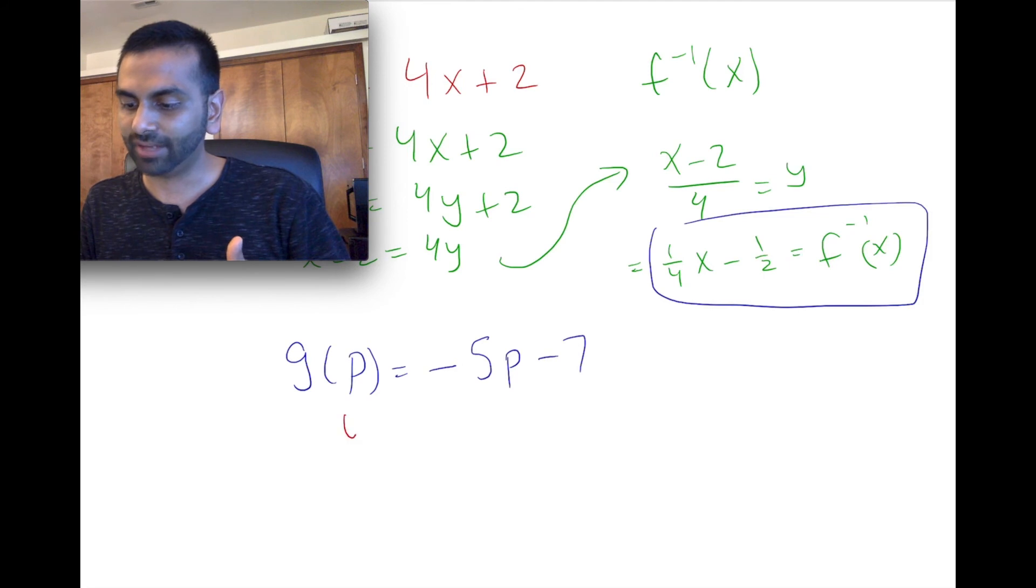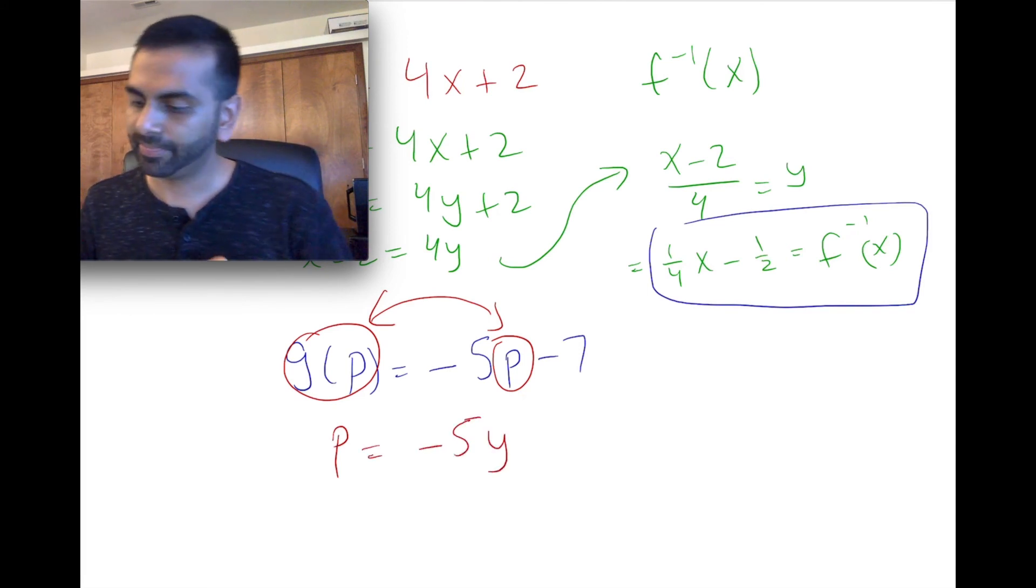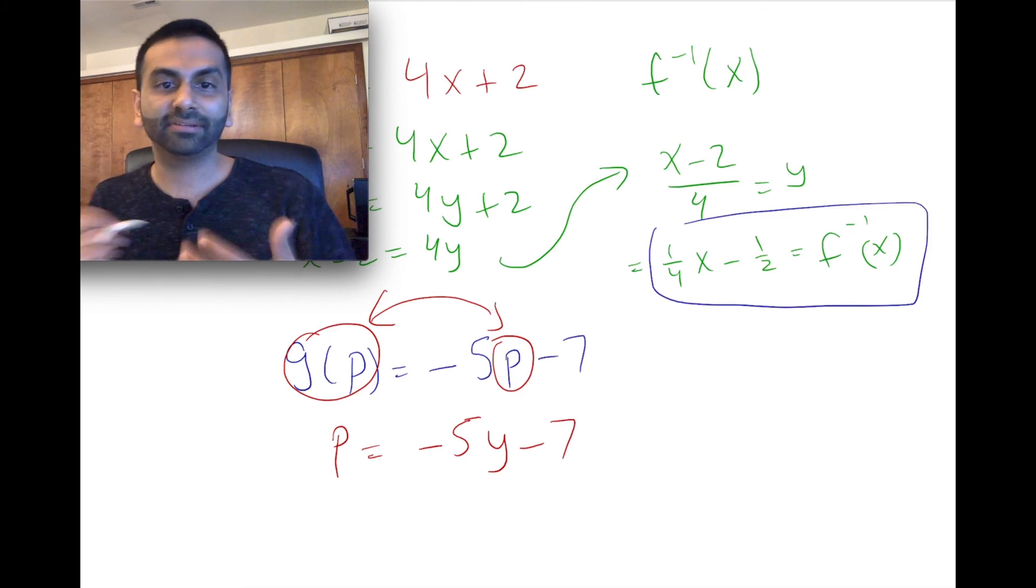So if you were to call that y or q or whatever your y variable is, we could just say we could switch this guy and the input and say, all right, so our p is equal to negative 5y minus 7.